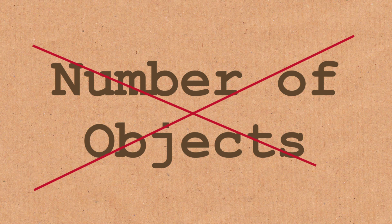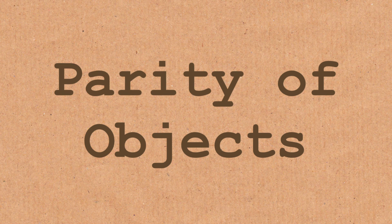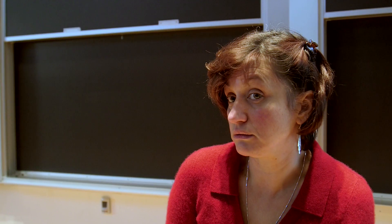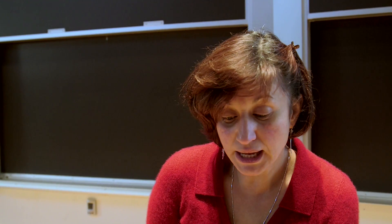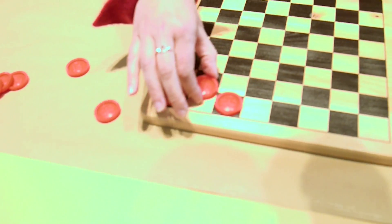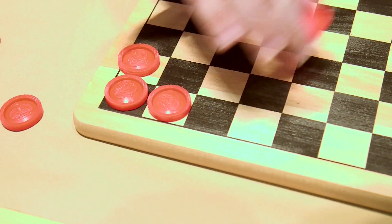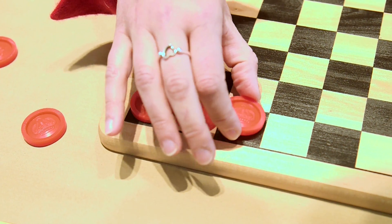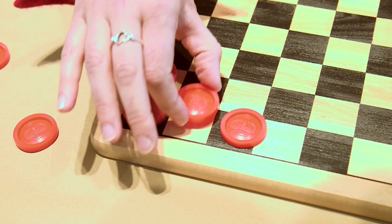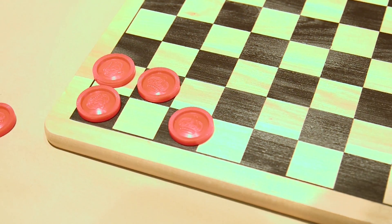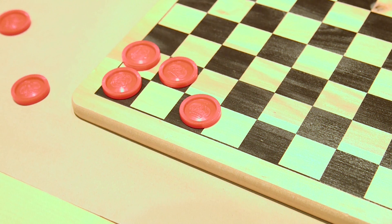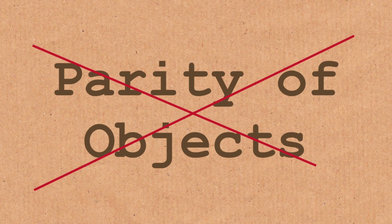We can try something else: parity of objects. Perhaps the number of clones stays only odd or only even. But again that's not the case. We start with three clones, and at the very next move we have four clones — so that changes from odd to even and back to odd.